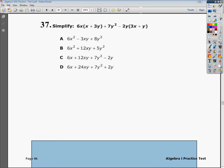This is the Algebra 1 Practice Test 2, EOC, question number 37. It says to simplify the expression 6x(x + 3y) + 7y² - 2y(3x + y).